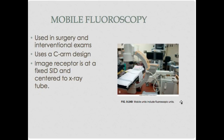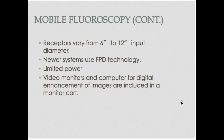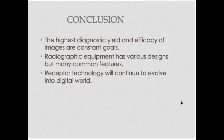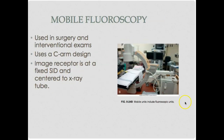C-arms are used in fluoro and interventional procedures. The image receptor and the tube are at a fixed distance — nothing can change that. The receptors vary from 6 to 12 inches in diameter depending on the magnification and detail needed. Newer systems use flat panel detector technology. Video monitors and computers for digital enhancement of images are included in the monitor cart — you always want to turn those toward the doctor so they can see exactly what they're doing.